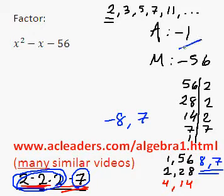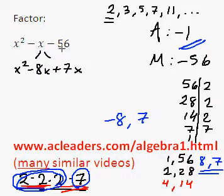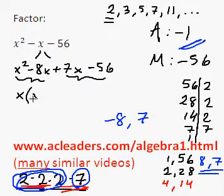So here I can split up the -x into -8x + 7x, then -56. And now we can factor by grouping. So these guys have an x in common, so we can factor it out. And these guys have a 7 in common, which we can also factor out.